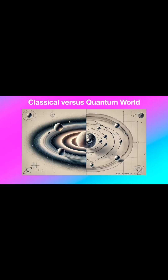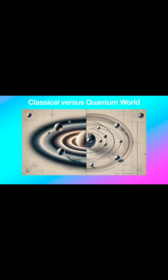Here we have this picture where we have on one side the solar system, celestial mechanics, and on the other side the subatomic particles. So it wants to illustrate this classical and quantum world. So maybe they are not so apart?